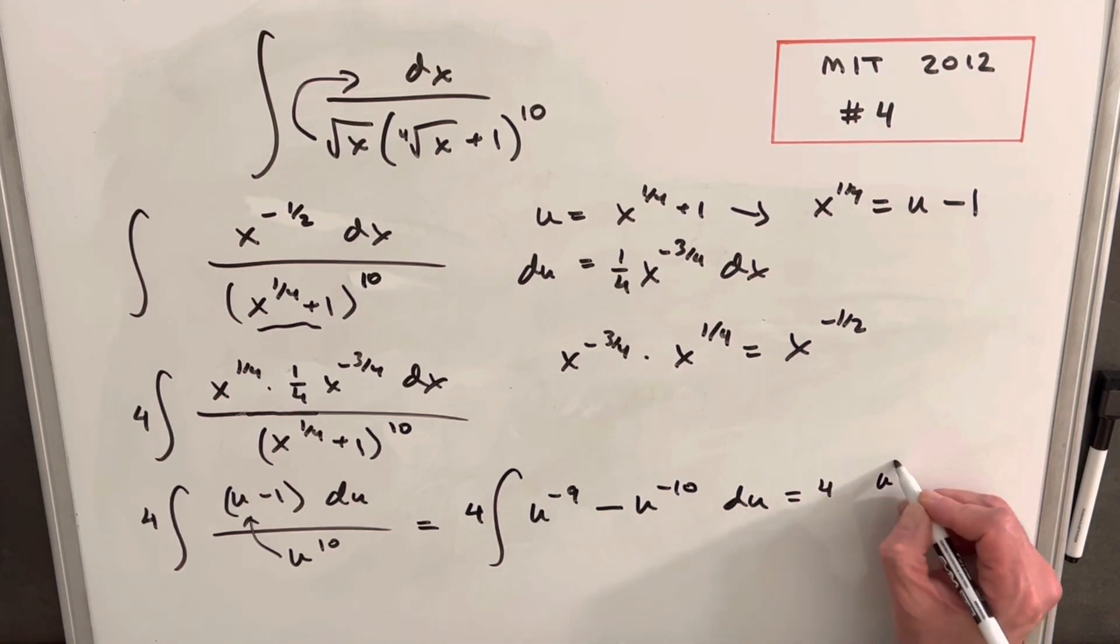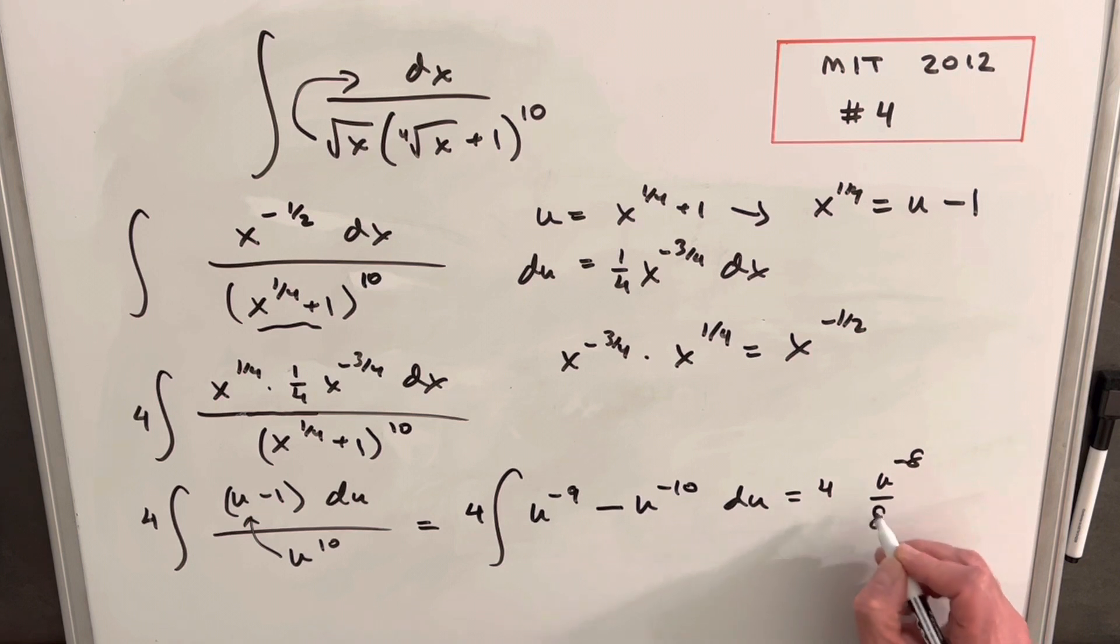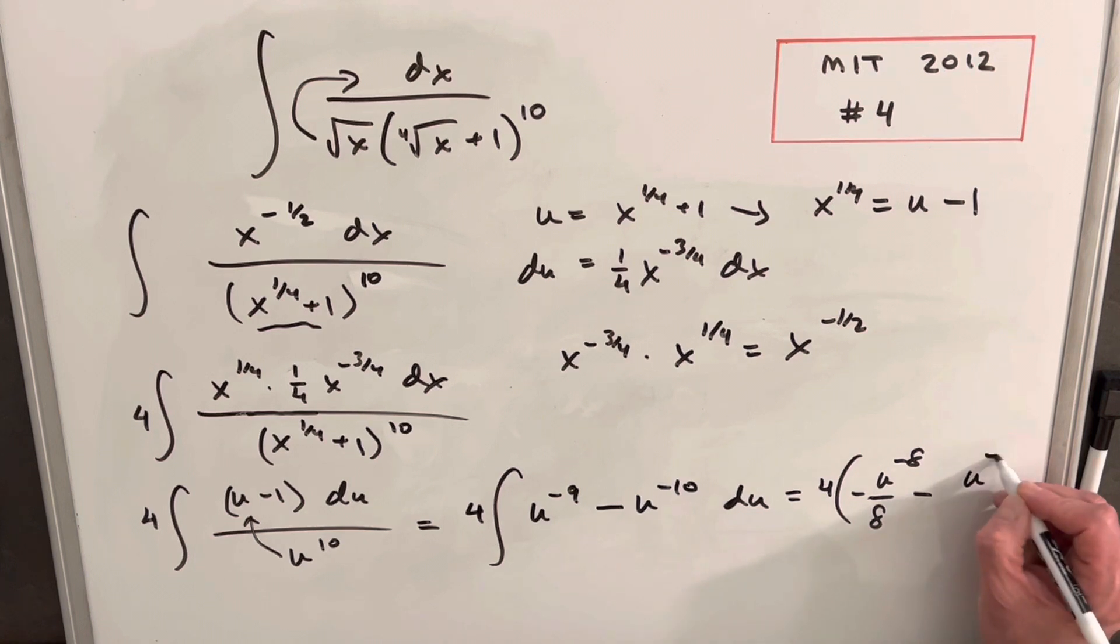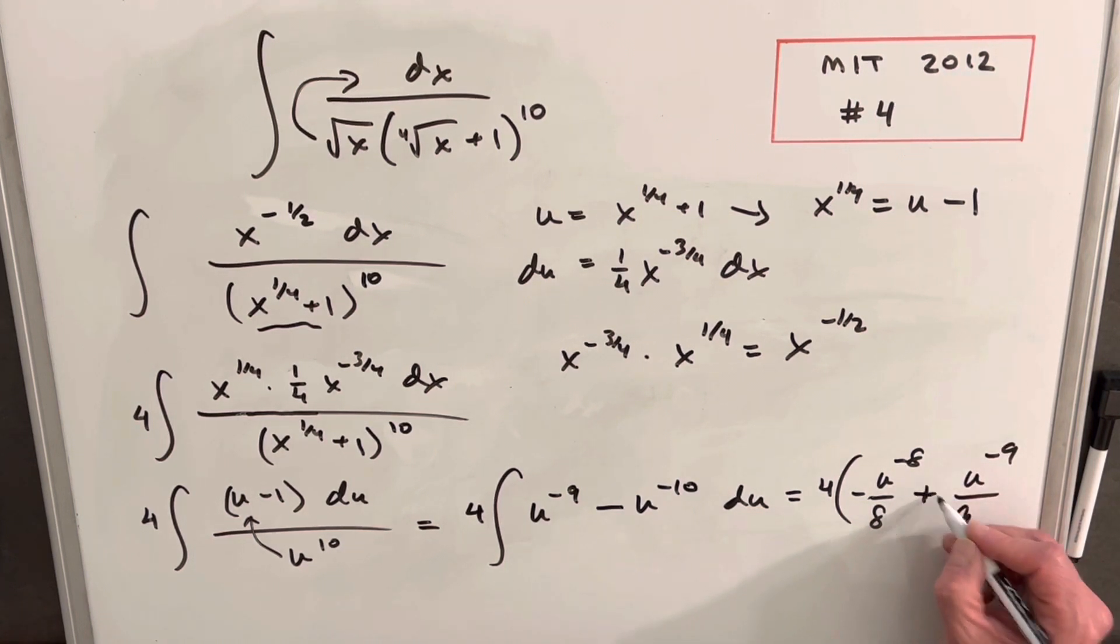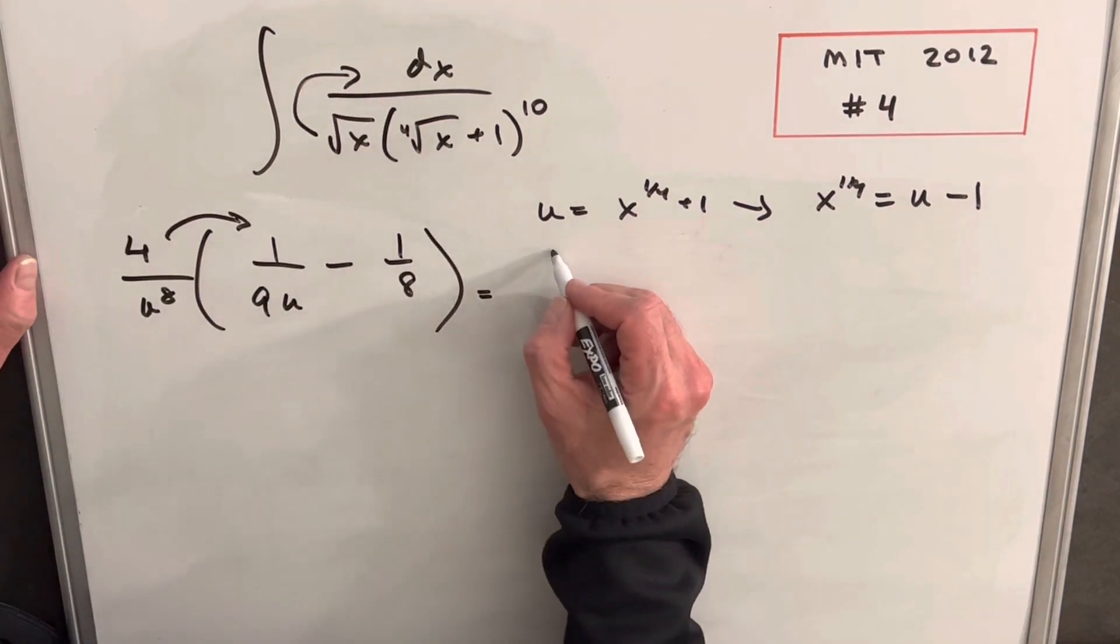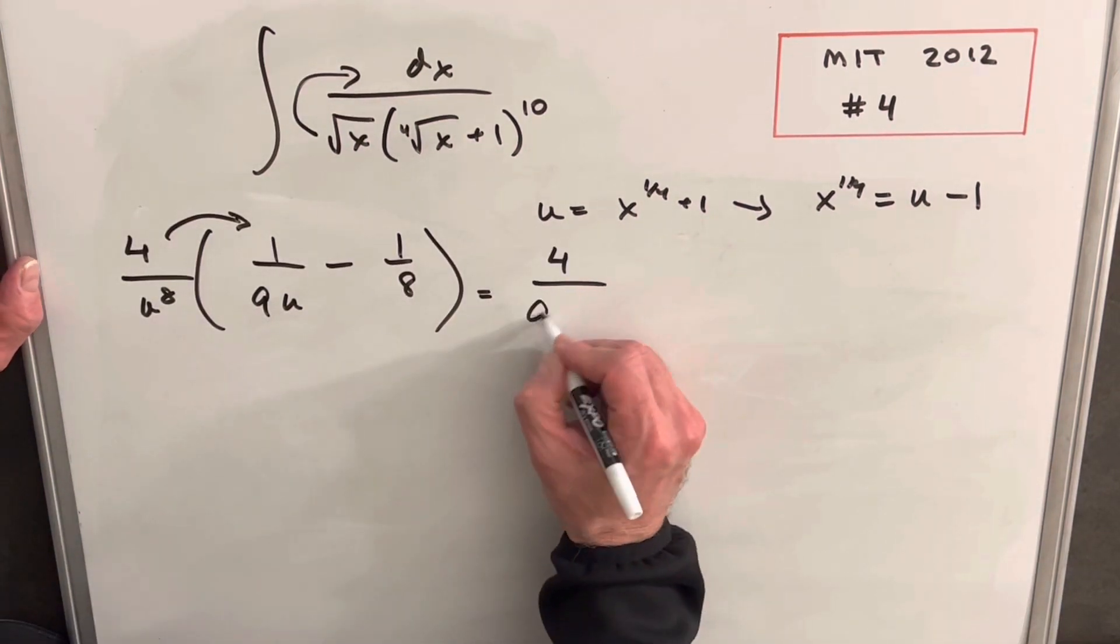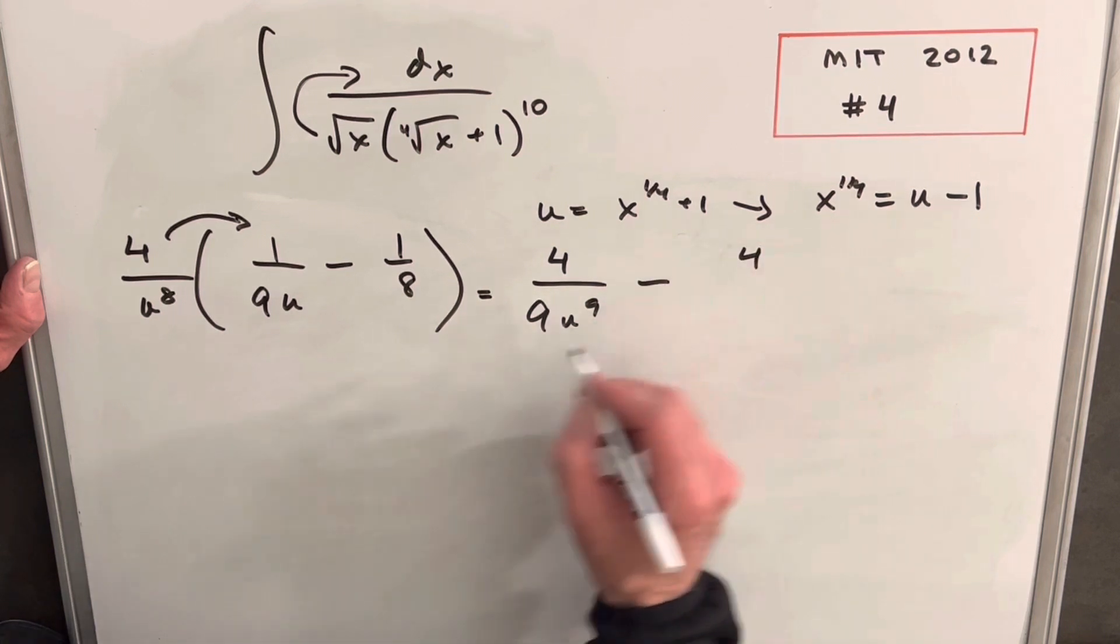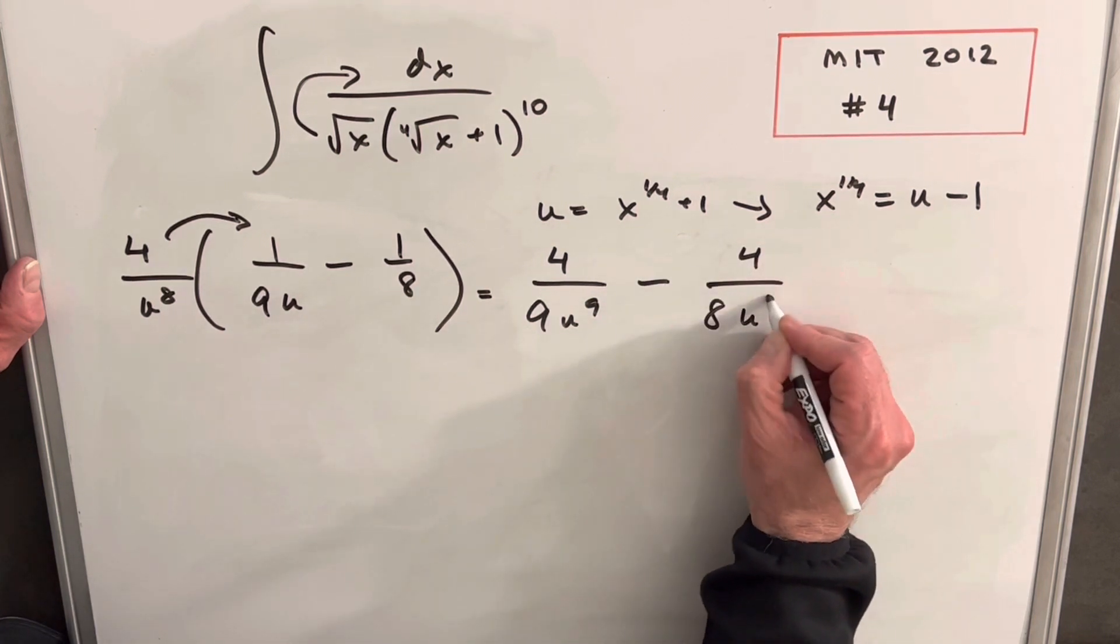We're going to have four u to the minus eight over eight. We'll have a negative there, and then we're going to have a u to the minus nine over a minus nine, but that'll just change the sign to a plus. So then we'll have four over nine u to the ninth minus four over eight u to the eighth.